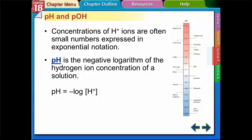Now we're going to talk about pH and pOH. The concentrations of H+ ions are often small numbers expressed in scientific notation. Instead of working with all those small numbers, scientists invented the pH scale to quickly express the concentration of H+. The pH applies to H+ and uses a log scale. We define pH as the negative log of the hydrogen ion concentration.